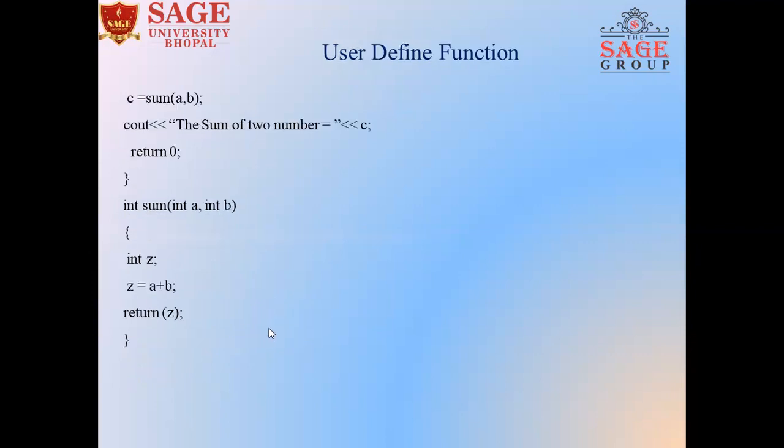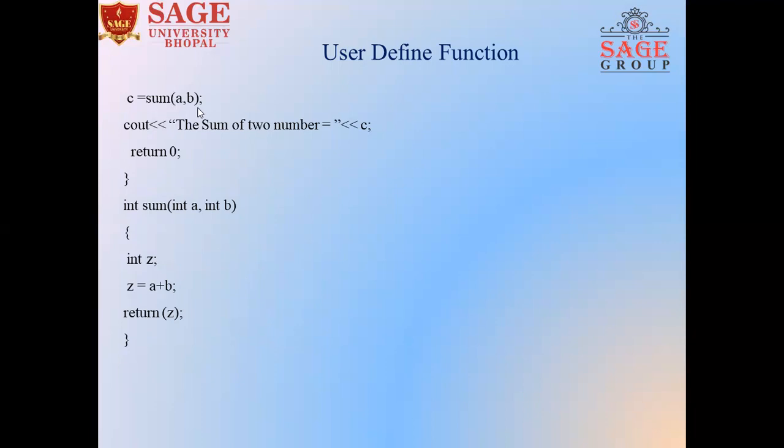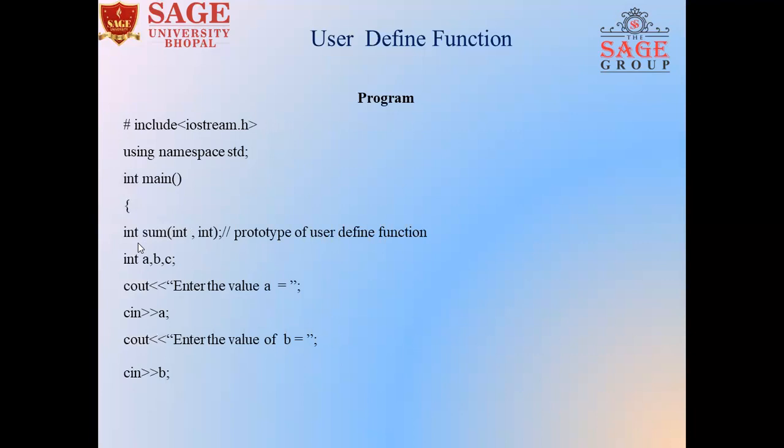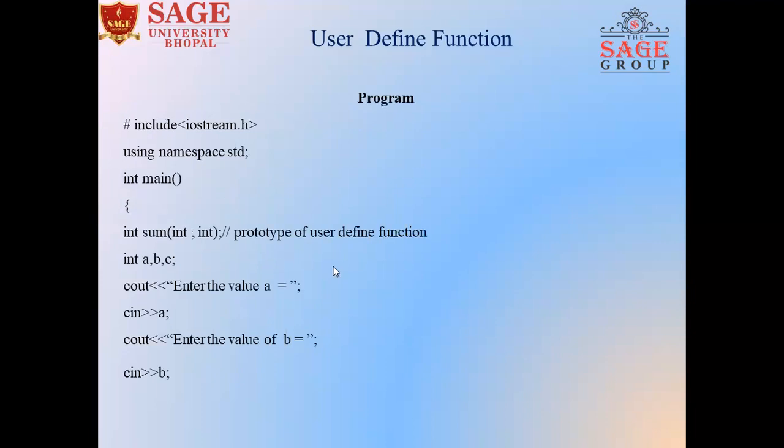Now after that, we will call the user-defined function sum and pass two parameters A comma B. The return answer will be stored in the C variable. This user-defined function will provide the prototype declaration at the starting: integer sum integer comma integer. Prototype means it is information about the function.